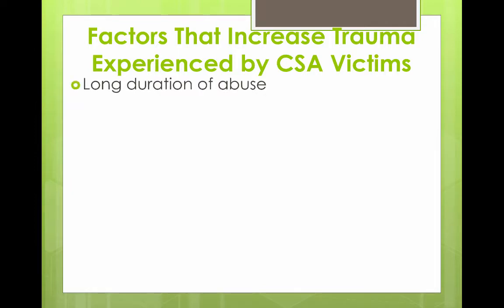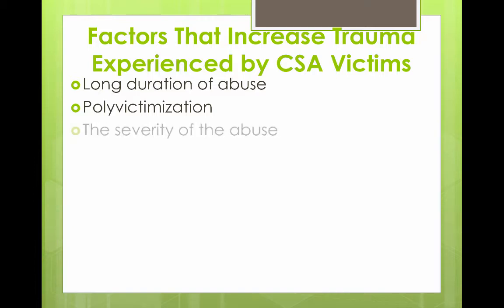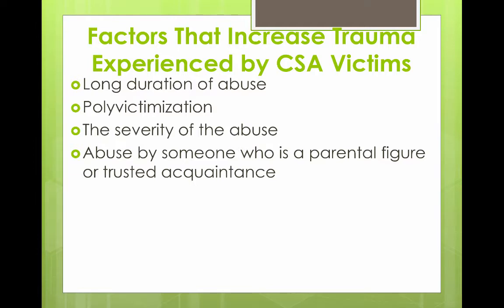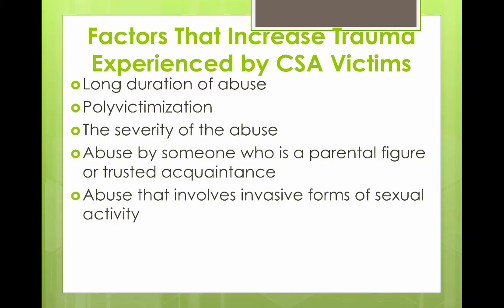Factors that increase trauma include duration — the longer and earlier the onset, the greater the impact. Polyvictimization is also a factor: if someone experienced CSA while also experiencing neglect or witnessing intimate partner violence, there is a lot of co-occurrence. Severity of the abuse, whether the abuse was committed by a parental figure or trusted acquaintance, and whether it involved invasive forms of sexual activity all contribute to the level of trauma.